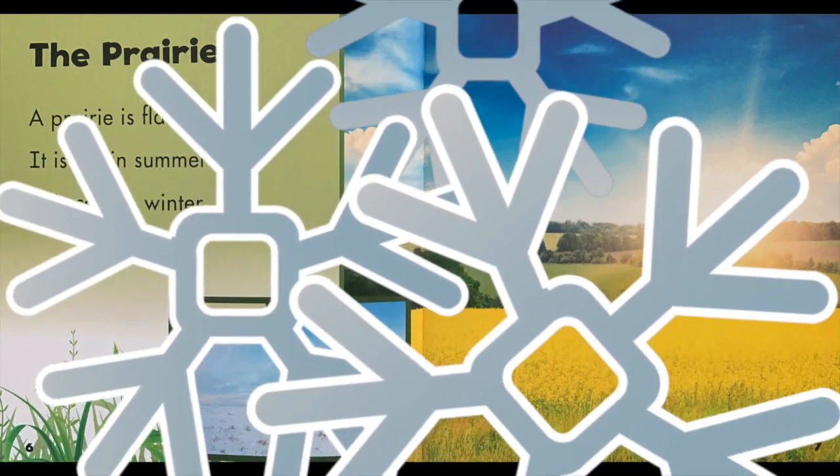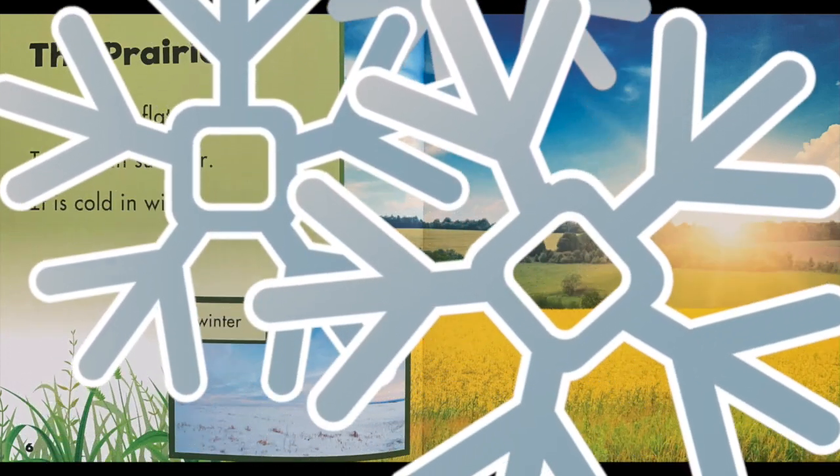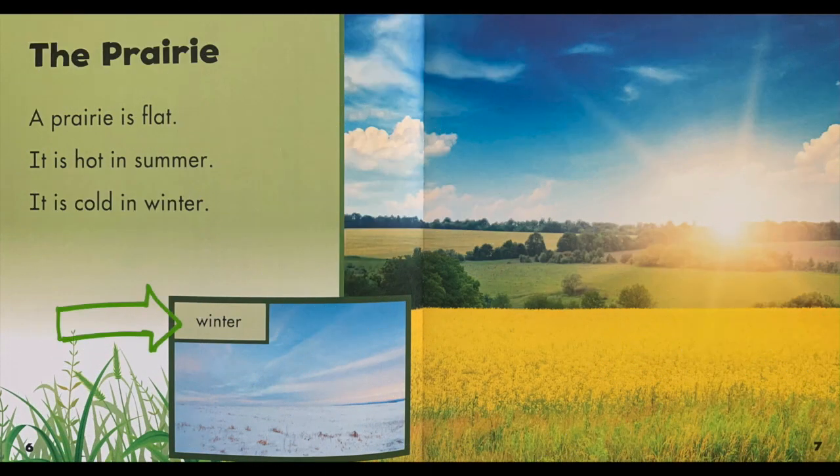That's right, that is snow. And look, there's a label that tells us what that picture is of. It says winter above the picture, so that tells us that picture is a picture of the prairie in the winter.